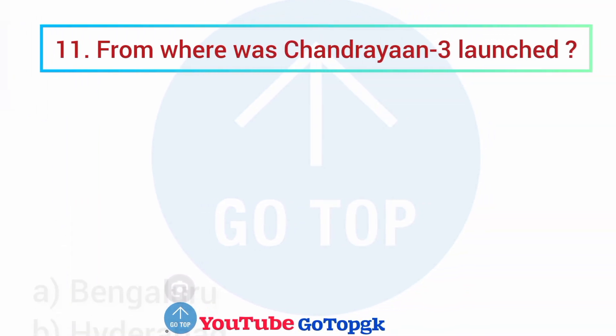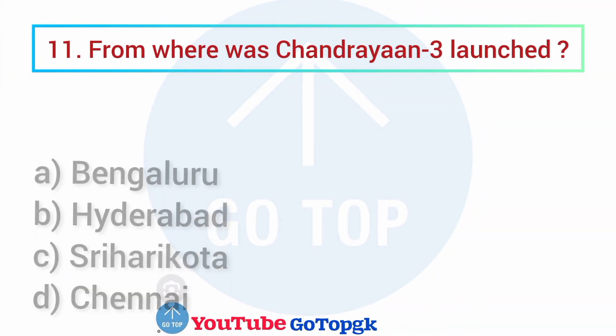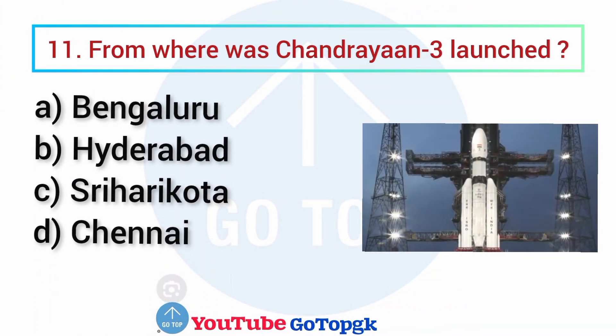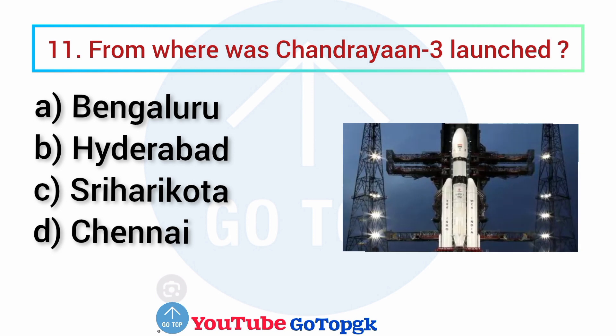Question No. 11. From where was Chandrayaan-3 launched? Options: A. Bengaluru, B. Hyderabad, C. Sriharikota, D. Chennai. Your correct answer is option C: Sriharikota.